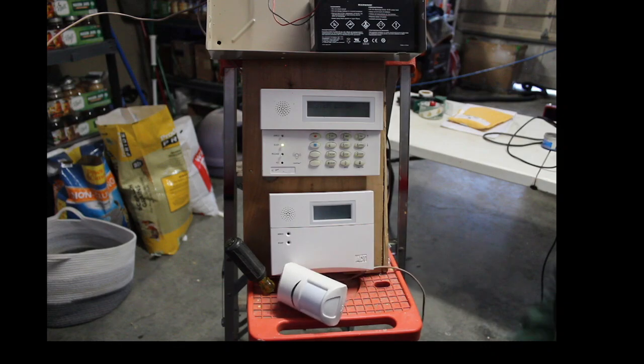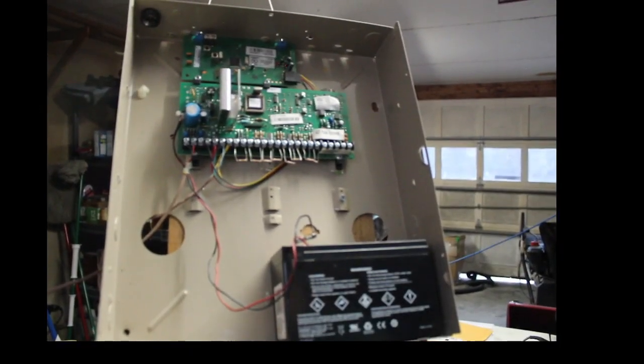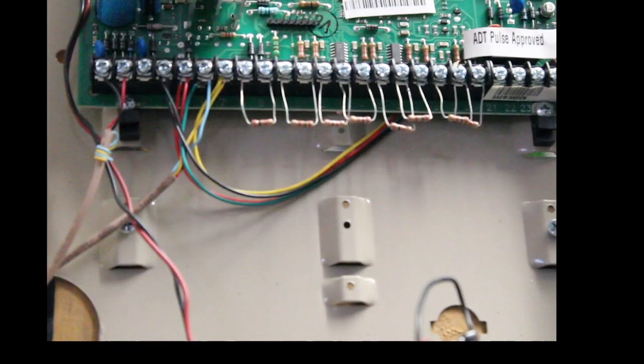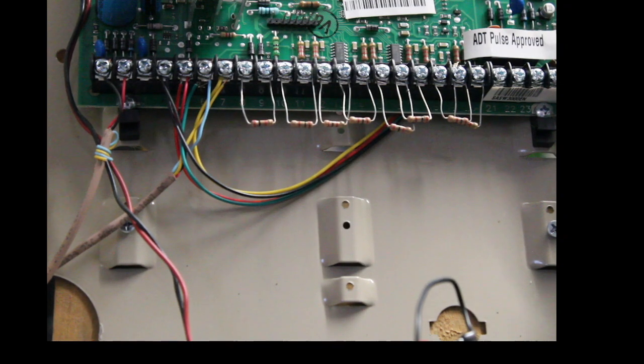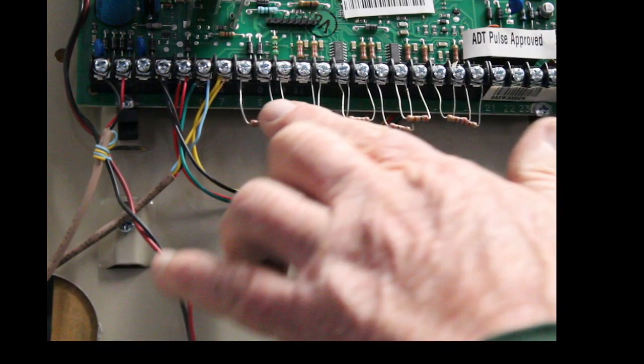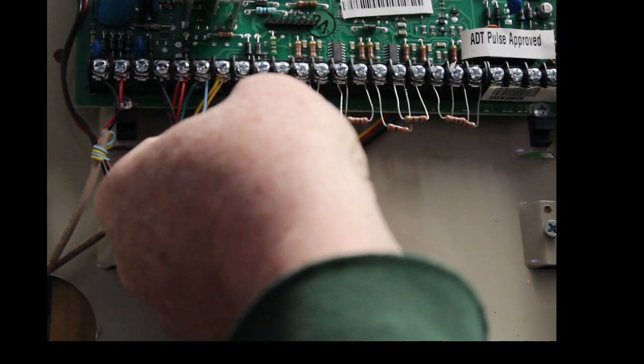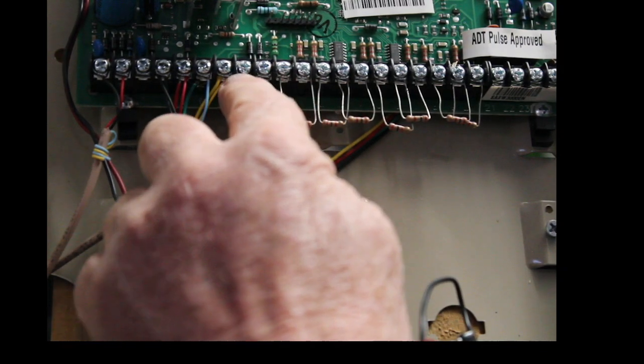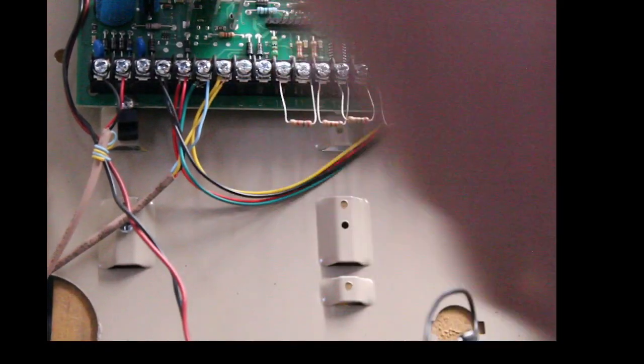I'm going to wire mine in just for simplicity into zone one. You can wire it into any one of these zones. And then all you do is just, you've got a resistor right here. Just take the resistor off, and then put the yellow and blue back on to one of these two, where you took the resistor off. So, let me take my resistor off. Then you take the resistor. I've got to get some more wire on here.